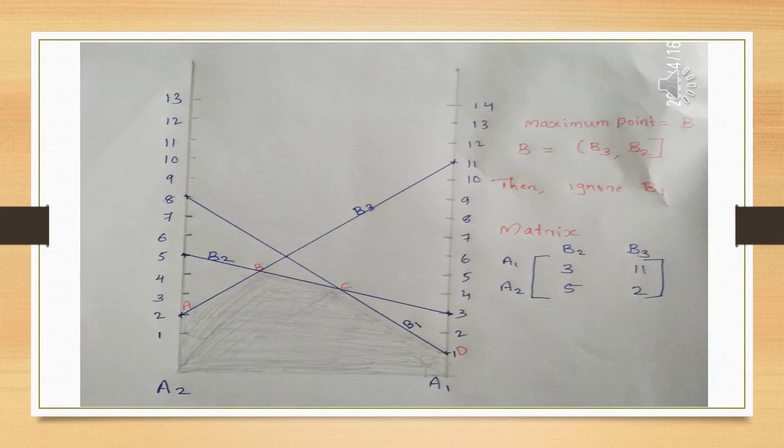For each of B's strategies — B1, B2, and B3 — we plot the corresponding lines. For A1 with B3, that value is 11, and for A2 it is 2. We draw these 3 lines closely together on the graph.